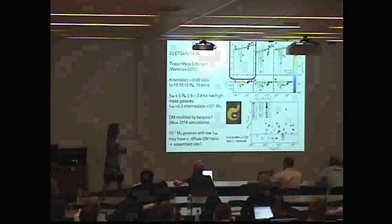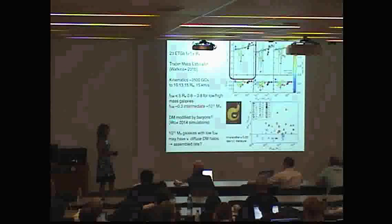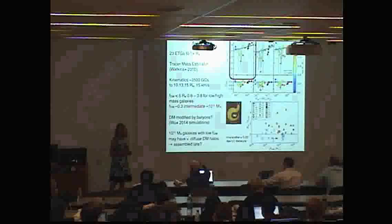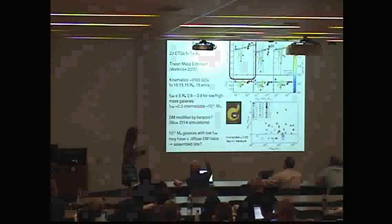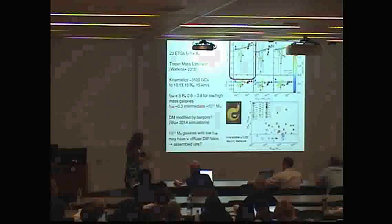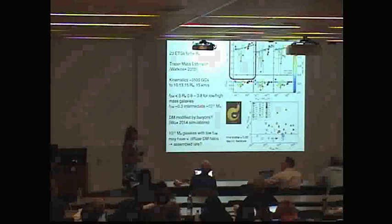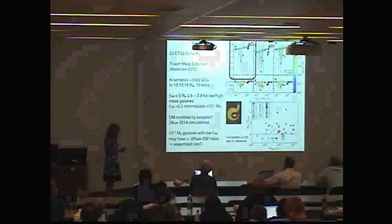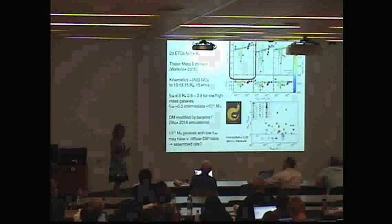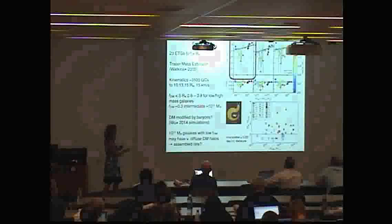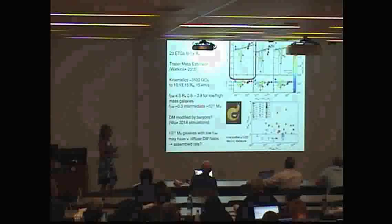But the intermediate-mass galaxies seem to have low dark matter fractions, only about 0.3. The stellar mass that corresponds to is about 10^11 solar masses. This does seem to be consistent with the simulations of Woo et al., where the dark matter is modified by the stellar mass. The total mass is a bit higher there. So we can move the boundaries if you like. That's a hint that these intermediate-mass galaxies have been modified by interactions with baryons.